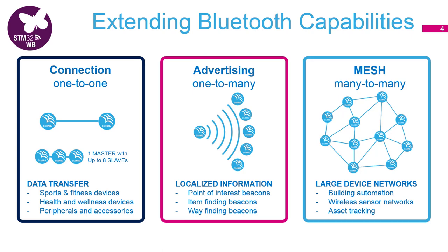Compared to other protocols such as ZigBee or Thread, there are no routing tables — meaning there is no specific path from node A to B. Data are simply broadcasted to all nodes and the nodes repeat the information. The advantage of this approach is that it's much simpler to deploy, and it's very easy to add or remove additional mesh nodes.